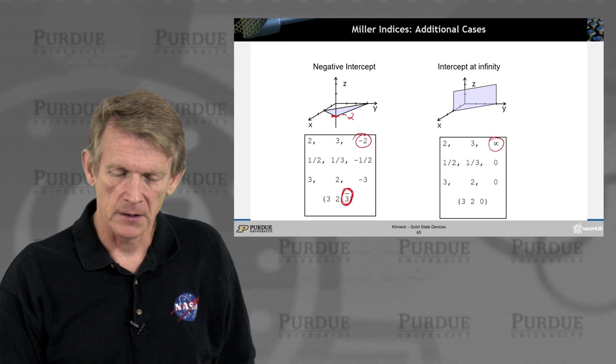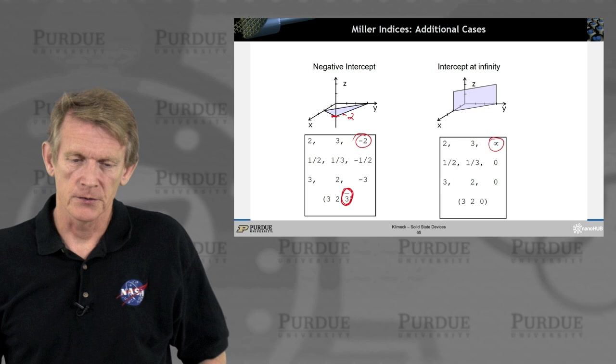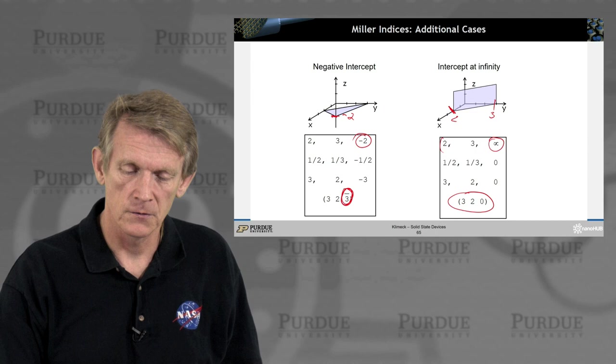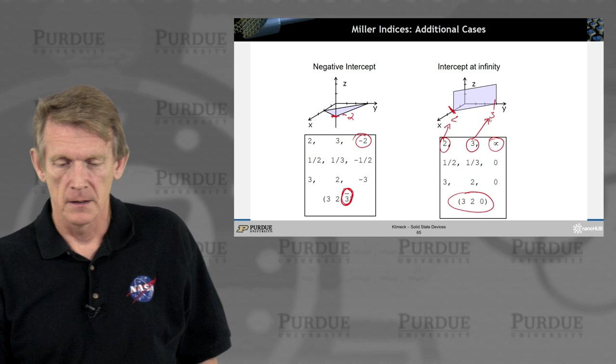And your index then is, again, 3, 2, 0. And you divide by infinity and come up with a 0. So this particular surface would be the 3, 2, 0 surface that has intersects with 2 and 3 here.